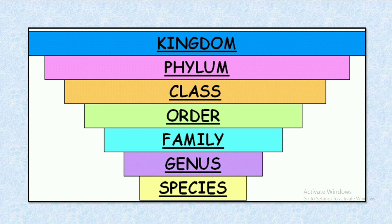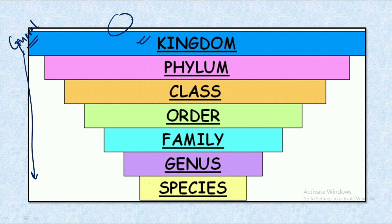Now let's understand about the hierarchical classification. You need not go into the depth of each subtype — just remember this order because many questions have been asked from this concept. At the top level we have the Kingdom, which is a more general form of division, and as we move down, the final and most specific division is the Species. From Kingdom we move to Phylum, then Class, then Order, then Family, then Genus, and finally Species.